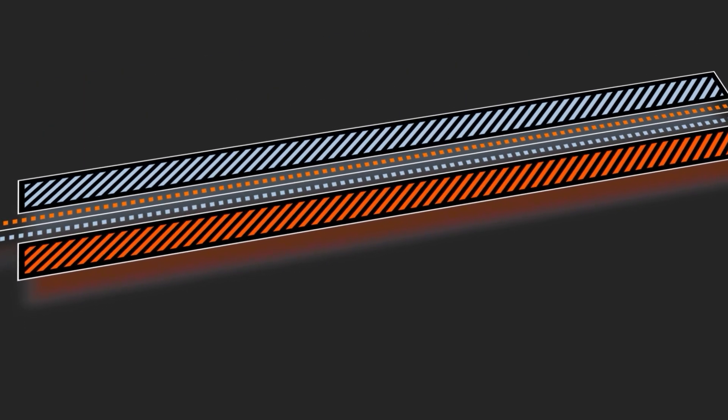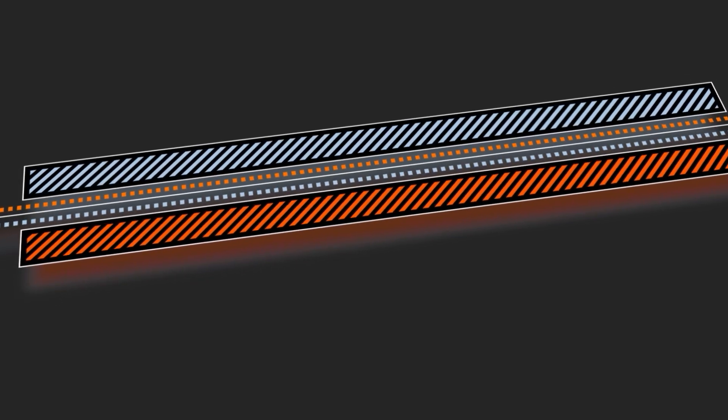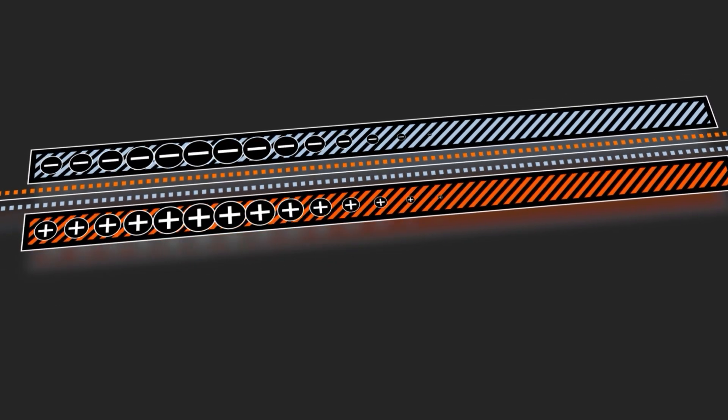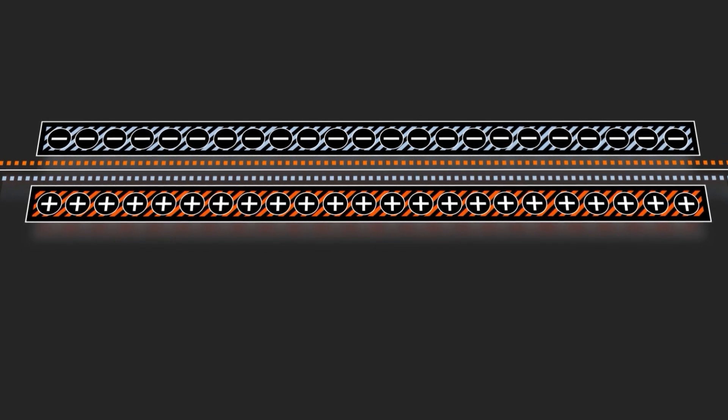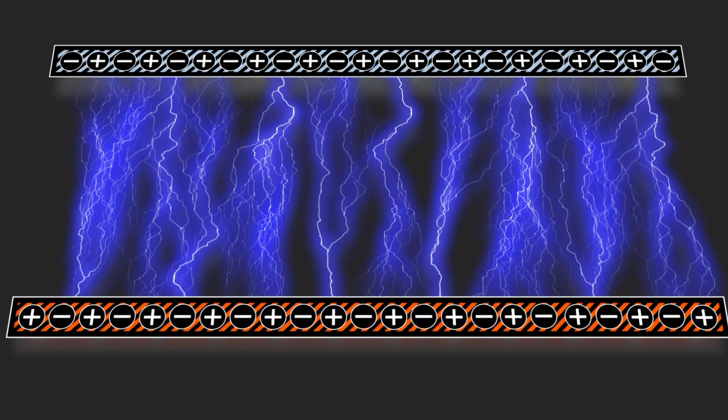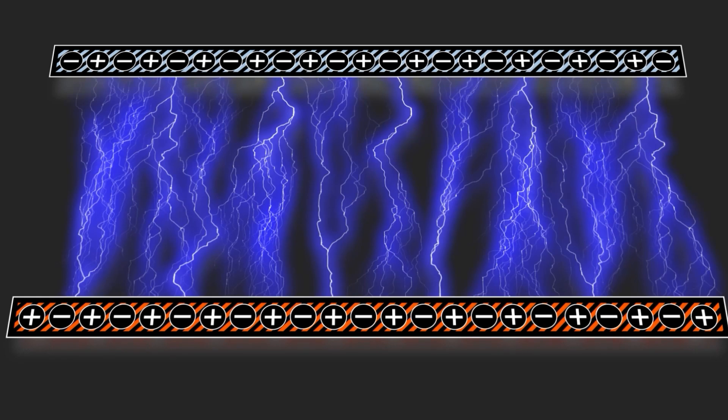Static electricity is created when friction occurs as dissimilar materials come into contact with one another. When this happens, one accumulates a positive charge and the other a negative charge. When the materials separate, an electrostatic discharge can occur as the charges equalize. This discharge can result in a spark.